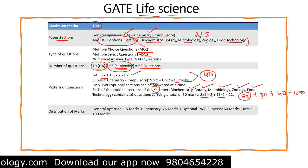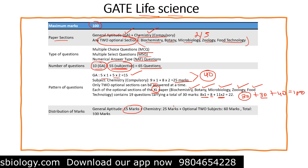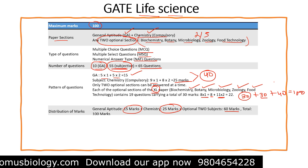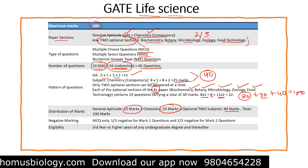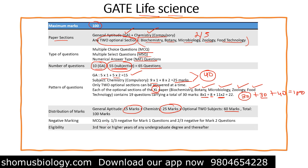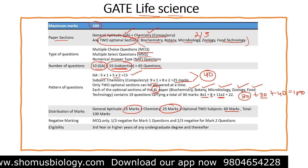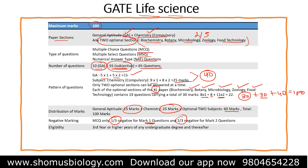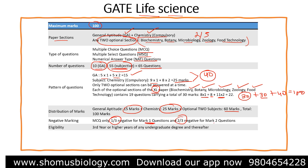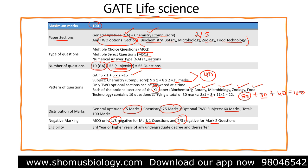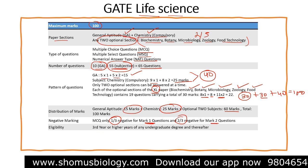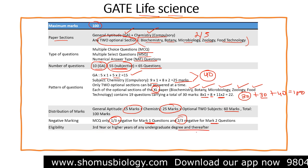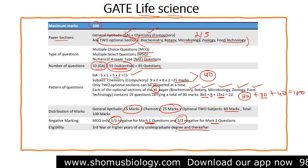To summarize the mark distribution: general aptitude is 15 marks, chemistry is 25 marks, and the two optional subjects together are 60 marks, totaling 100 marks. Negative marking applies to MCQs only: one-third negative marking for one-mark questions and two-thirds negative marking for two-mark questions.